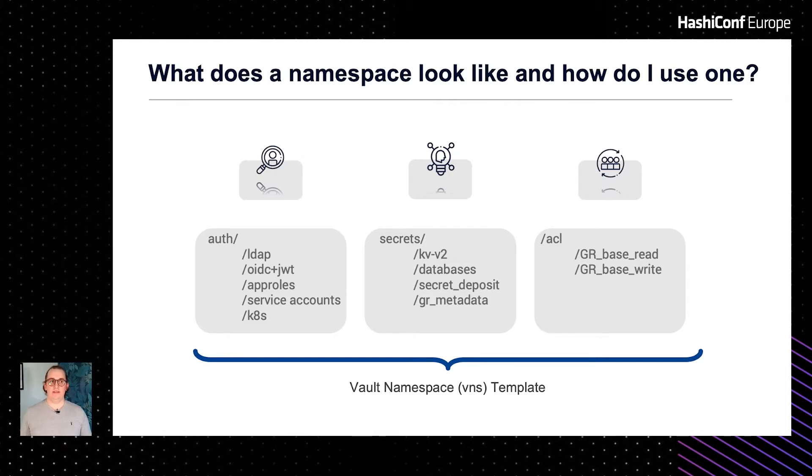The ACL guardrails we've already discussed allowed for the prevention of misconfiguration when users were self-serving their namespaces, but also the misuse of namespaces. One of the challenges when we initially designed the solution was we didn't want to have infinite child namespaces created inside our Vault namespaces. So this is where the initial guardrails and base policies were born — we needed a way of preventing users from creating resources that would put a strain on our Vault infrastructure.